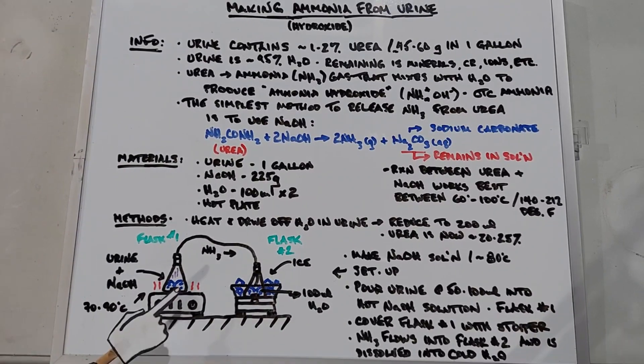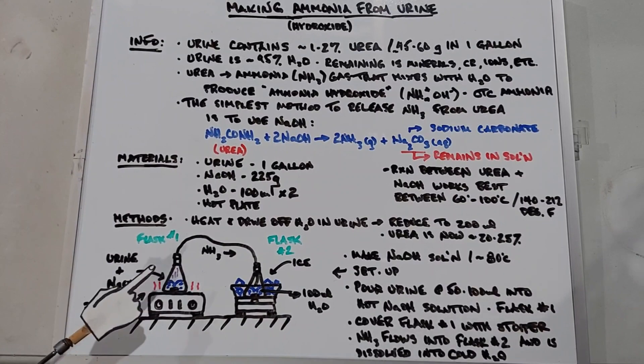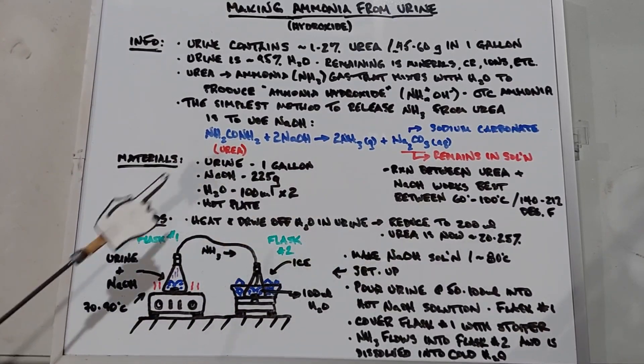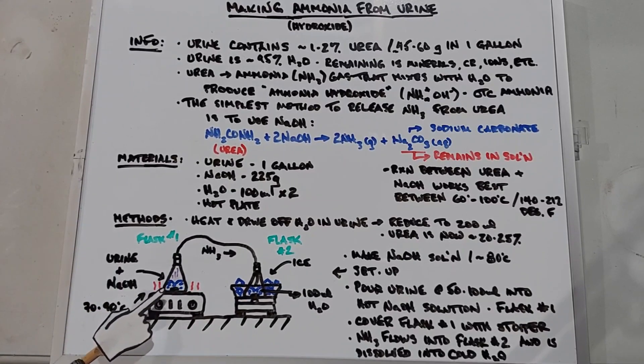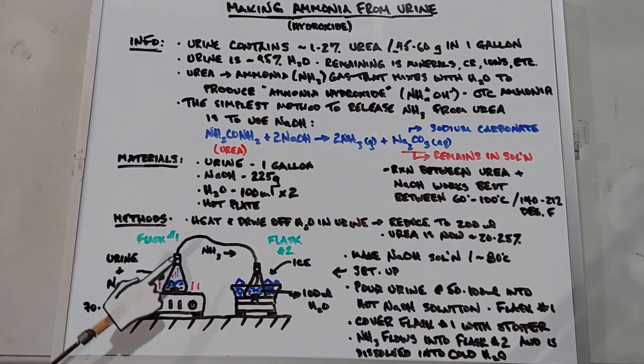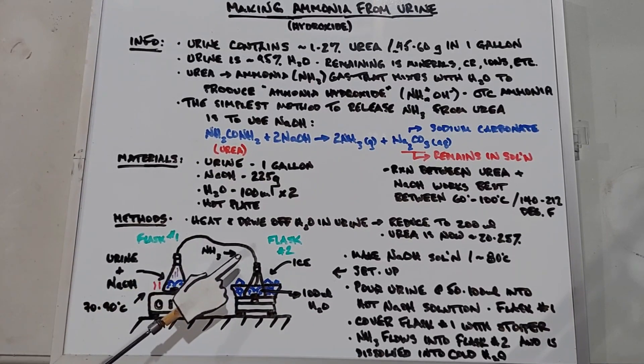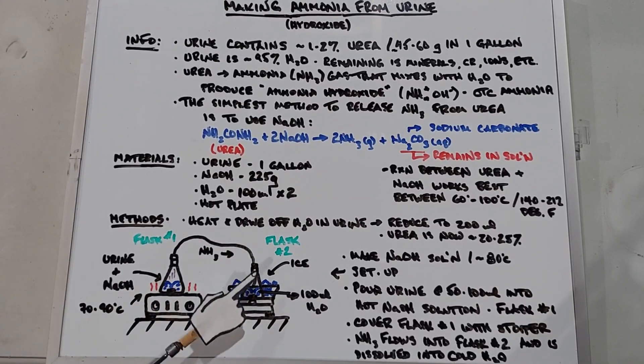We have our sodium hydroxide solution made at around 80 degrees C. We're going to pour our 200 milliliters of dehydrated urine in around 50 to 100 milliliter aliquots into this flask, watching so that it doesn't boil over because that can happen. When we're done pouring it all in we're going to put the stopper in with the rubber hose.